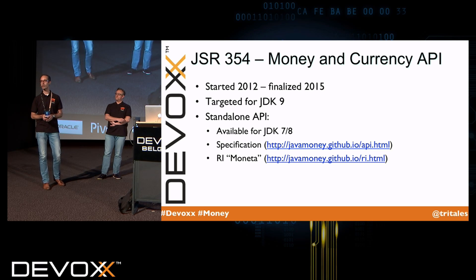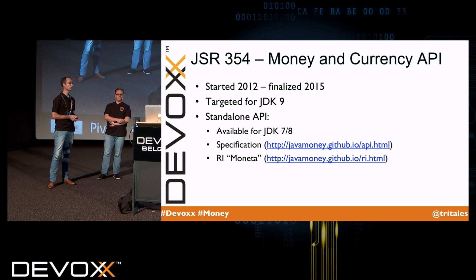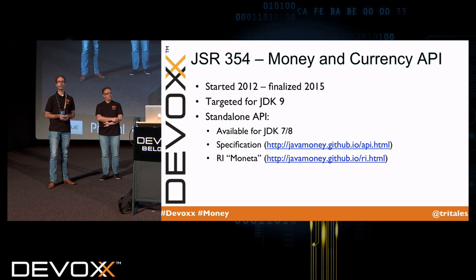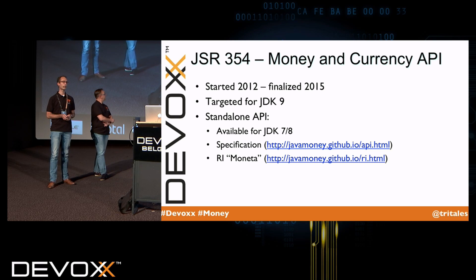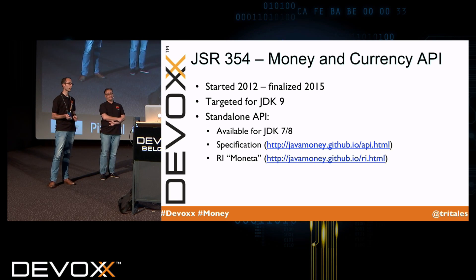JSR 354 — the Money and Currency API — started in 2012 and was finished in 2015. It's targeted for JDK 9, but in JDK 7 and 8 you can already use it as a standalone API in combination with the Moneta reference implementation.